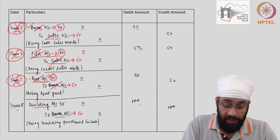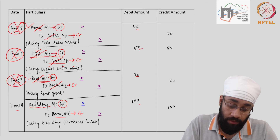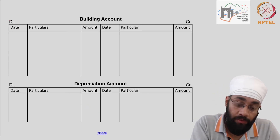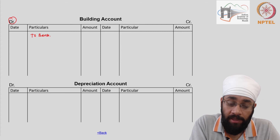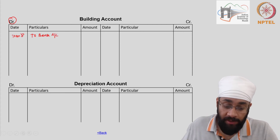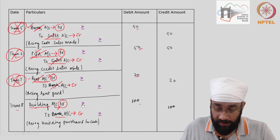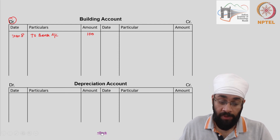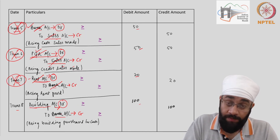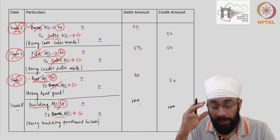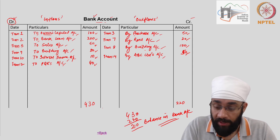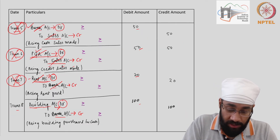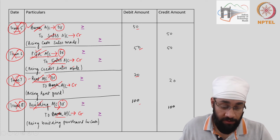Let us go to transaction 8. We have building account — we create a building account and go to the debit side. We write 'To Bank Account', this is transaction 8, and the amount is 100. Building account amount is 100 and we are done posting in the building account. The other account involved was bank account — already posted. Building is already shown there, so we don't need to worry about that. Transaction 8 is posted; crossing it off.